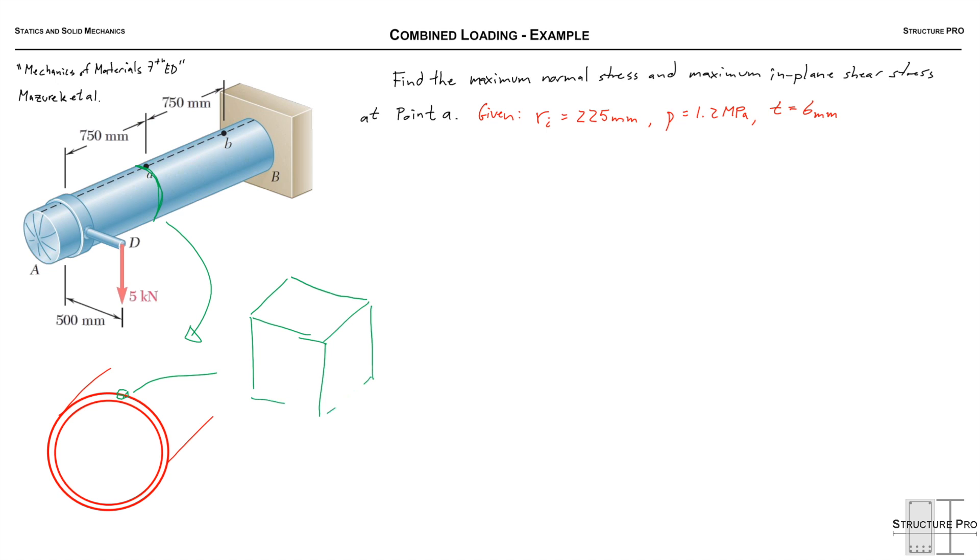We know from the pressure vessel equations that we have a hoop stress going around, the circumferential stress it's sometimes called. That's sigma 1, so that's going to be in this direction on the right face of the element.